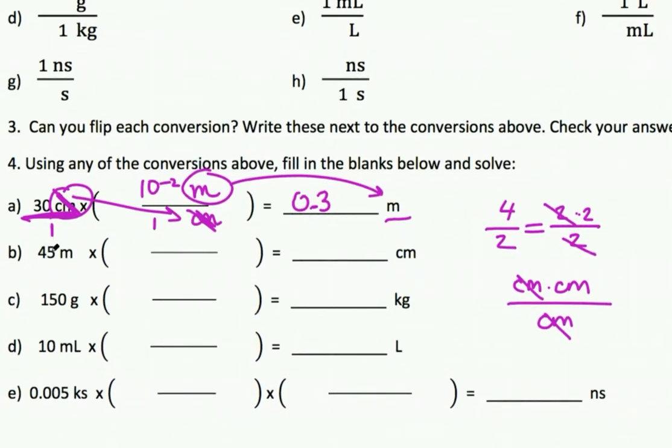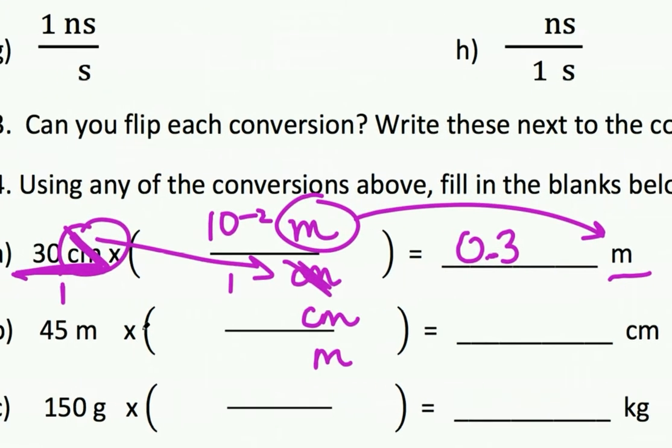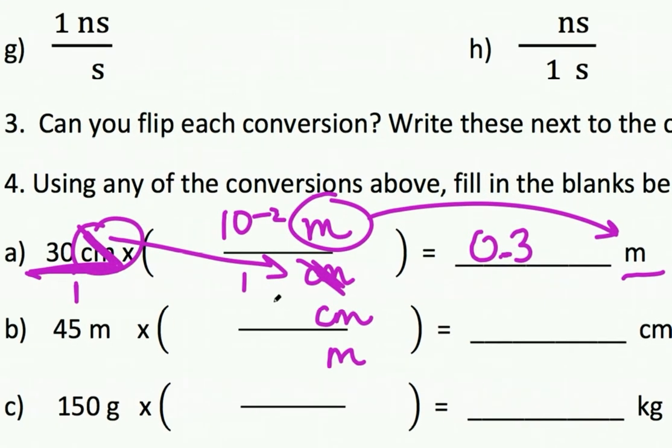All right, cool. So now, let's do the next one: 45 meters, and I have centimeters here. So I want my meters to go down here. I always do the unit first and then I figure out what the numbers should be. So once I know meters goes on the bottom, centimeters goes on the top, then I will probably use what makes most sense to me.